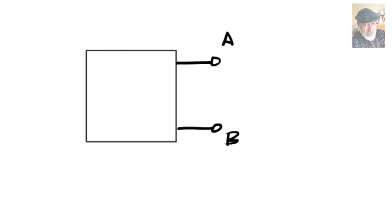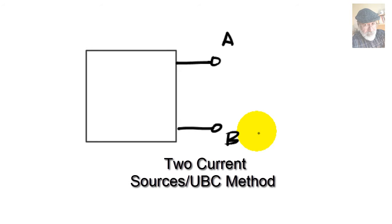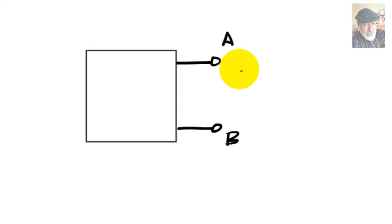To find the Thevenin equivalent at port AB for any network, we have seen in class several methods. One of them is the use of two different independent current sources. We take this circuit, and at the port AB, we connect one of those independent current sources, like this one.